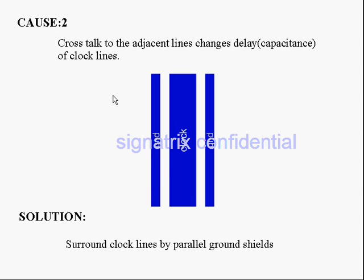The next cause for clock jitter is crosstalk to adjacent lines, which changes the delay of clock lines. For example, this is the clock line coming out from the clock generator. This clock line has two ground lines nearby. Due to these ground lines, the clock line may experience interference, and because of that we may get clock jitter.